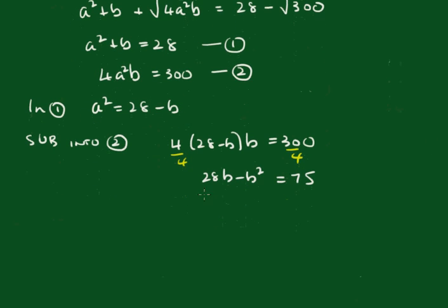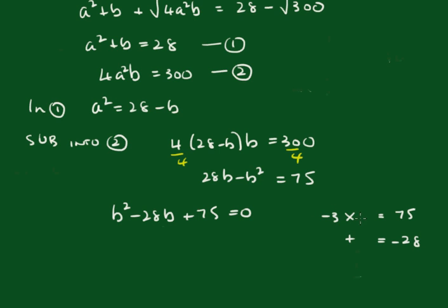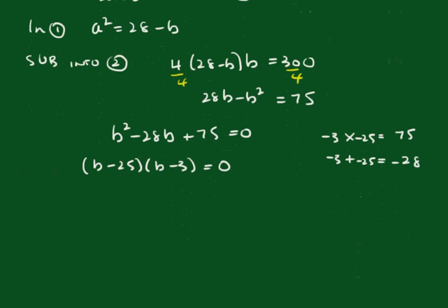Forming a quadratic — taking this across the other side — we get b squared minus 28b plus 75 equals 0. What two numbers multiply to give 75 and add up to give minus 28? Clearly that's minus 3 and minus 25. So we factorize: (b minus 25)(b minus 3) equals 0.